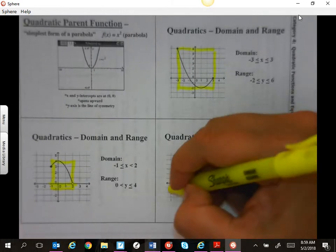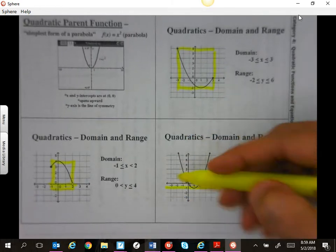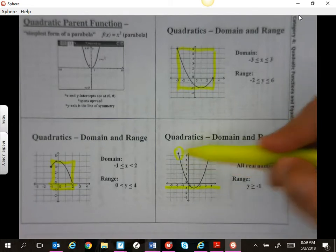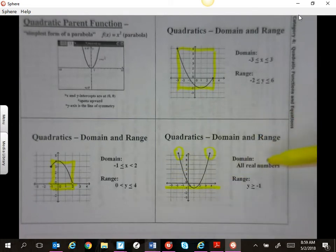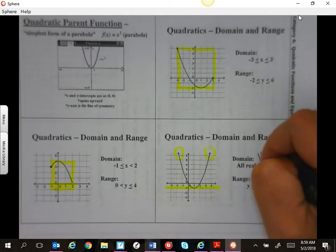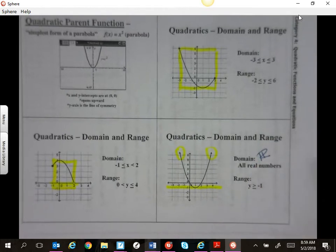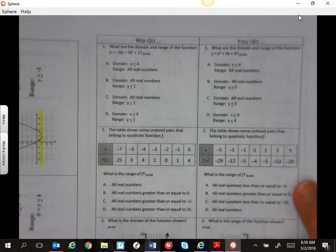Now, if you have arrows, you can't complete your window. So this is going to be all real numbers. It just keeps going in both directions. Remember, that symbol is this. And the range is everything bigger than negative one.